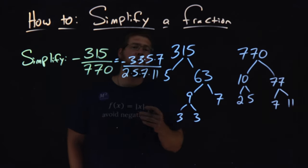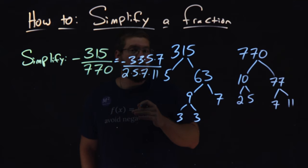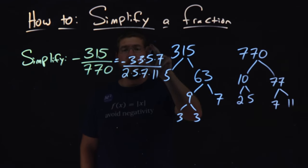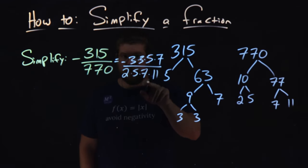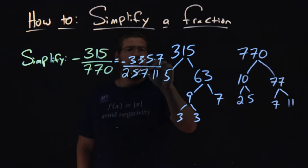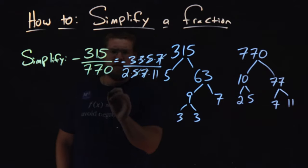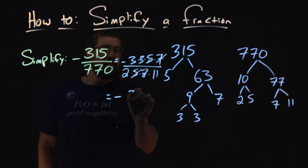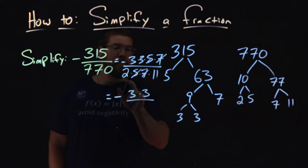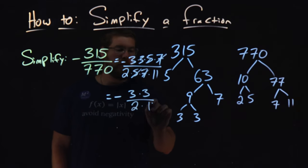And so now what we want to do is cross off the numbers that are duplicated in the numerator and the denominator. So we have a 5 here and a 5, a 7 and a 7, and that's it. So this simplifies to be negative 3 times 3 over what's left over, 2 times 11.